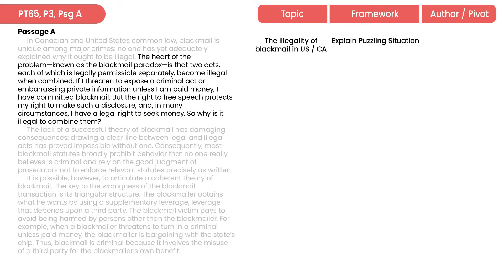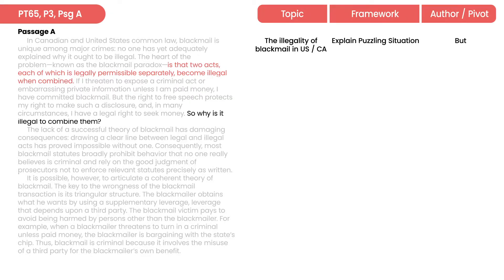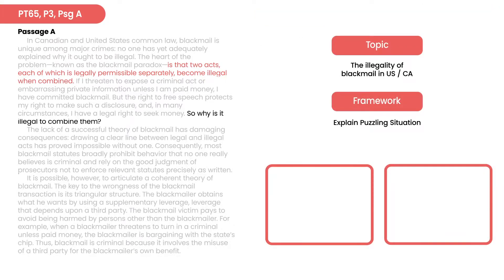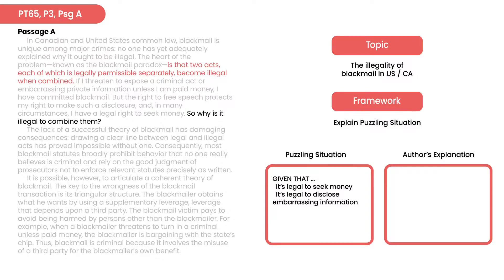Combine what? Well, it says there's a paradox. It uses pivot words we associate with paradoxes — 'but,' 'yet,' 'however.' The paradox is: you have two separate acts that are legal. Free speech says you're allowed to reveal somebody's embarrassing secret, and you're also allowed to ask them for money to mow their lawn. But when you combine those two things, it becomes blackmail — asking them for money in relation to revealing an embarrassing secret. Once we feel we have our big picture framework, we'll read with an appetite for an answer: why is it illegal to combine them?